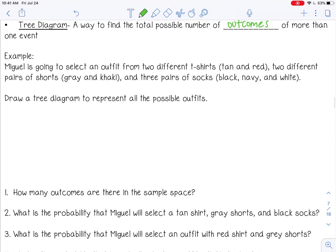So let's start with our t-shirts, tan and red. I'm just going to use T and R. And then I'm going to draw branches off of those. That's why it's called a tree diagram. So off of each one, I'm going to draw two branches for the two colors of shorts, gray and khaki. And then off of each one of those, I'm going to draw three branches for the three colors of socks.